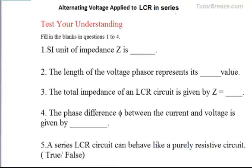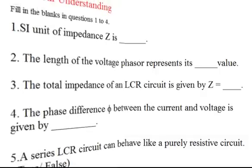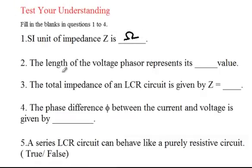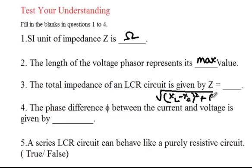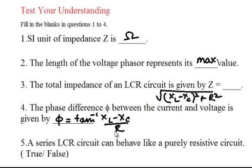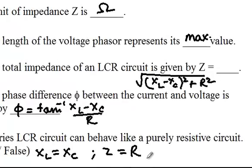To summarize the key results: the SI unit of impedance is ohms; the length of a voltage phasor represents its maximum value or amplitude; the total impedance Z equals the square root of (XL minus XC) squared plus R squared; the phase difference phi equals tan inverse of (XL minus XC) over R. A series LCR circuit behaves like a purely resistive circuit when XL equals XC, making Z equal to R — this condition is called resonance, which will be discussed in a separate lesson.